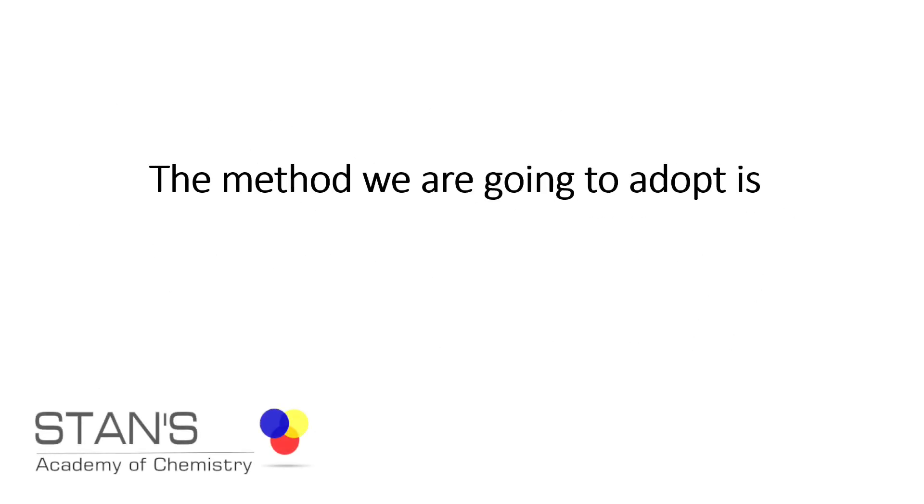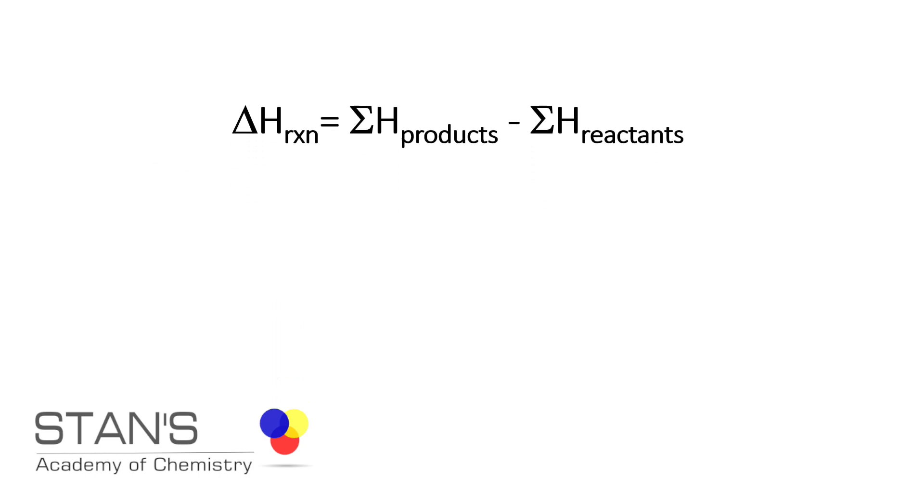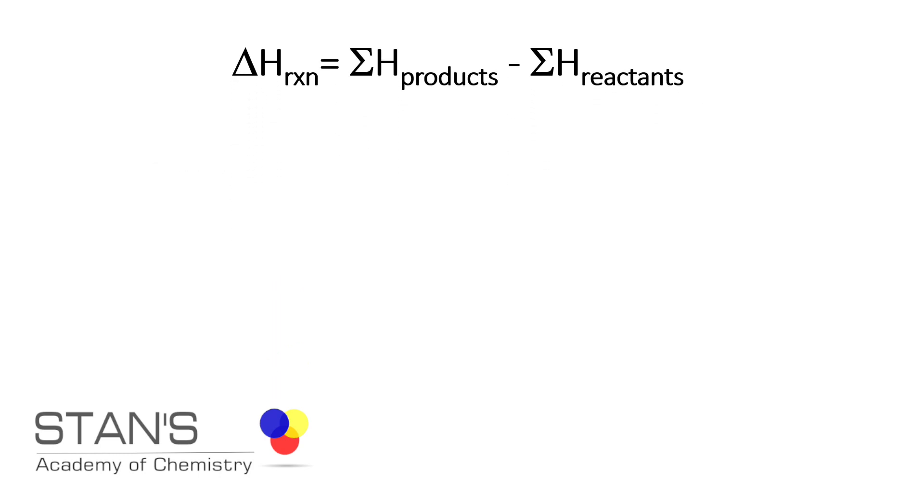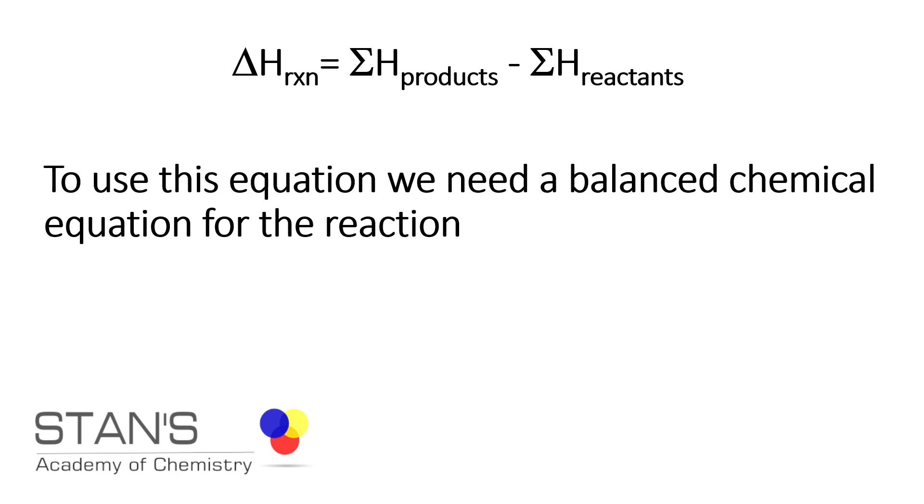The method we are going to adopt to solve this problem is delta H reaction equals sum of the enthalpy of the products minus sum of the enthalpy of the reactants. To use this equation, we need a balanced chemical equation for the reaction.